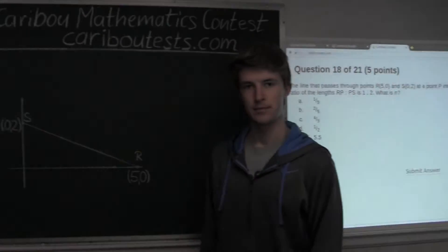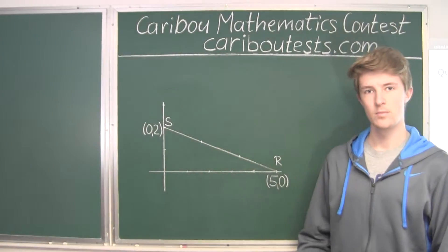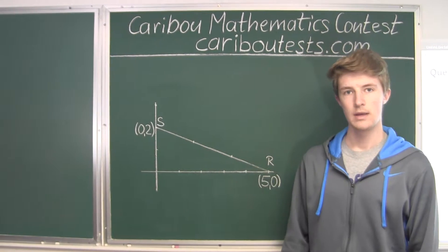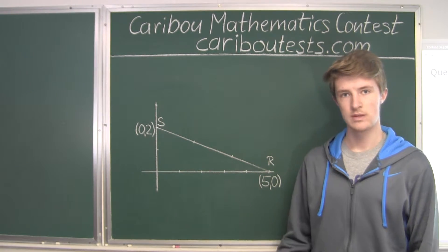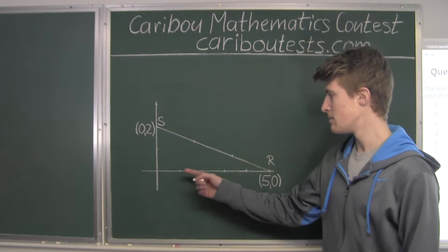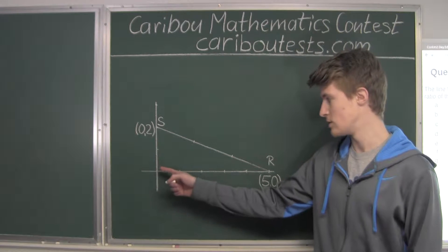All right, now, for the line Y equals NX, well, we know that if X was 0, well then Y would also be equal to 0, which means that this line must go through the origin.